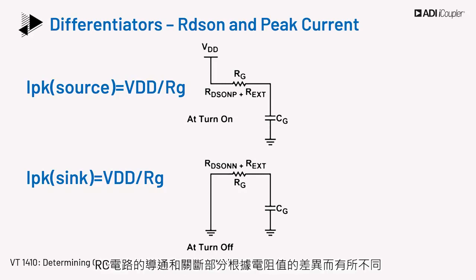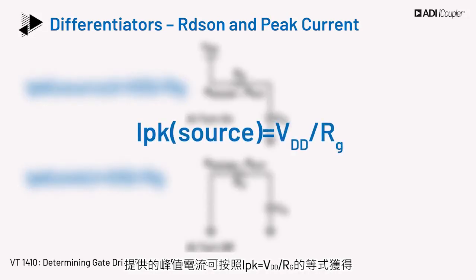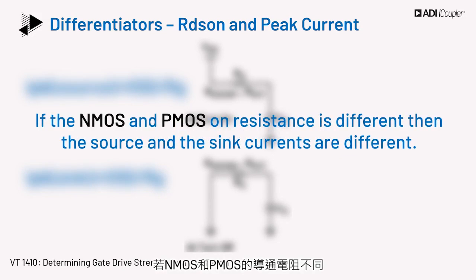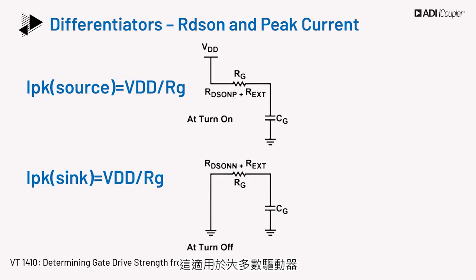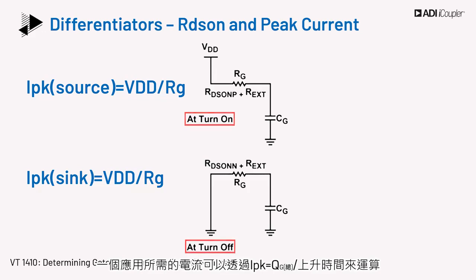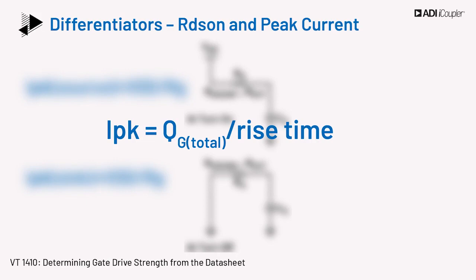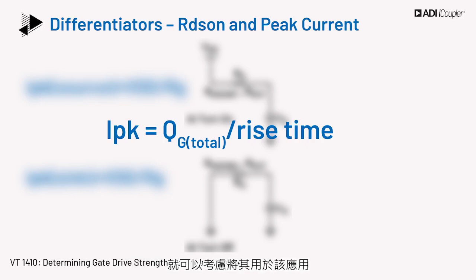The RC circuit for turn-on and turn-off is different depending on the value of the resistance. The peak current delivered can be obtained as I_PK equals V_DD divided by R_G. If the NMOS and PMOS on-resistance is different, then the source and sink currents are different. In most drivers this is the case, and in application the external gate resistors for turn-on and turn-off are also not equal. The current required for an application can be calculated from I_PK equals Q_G_total divided by rise time. As long as the driver can deliver the peak current to meet this requirement, the driver can be considered for an application.